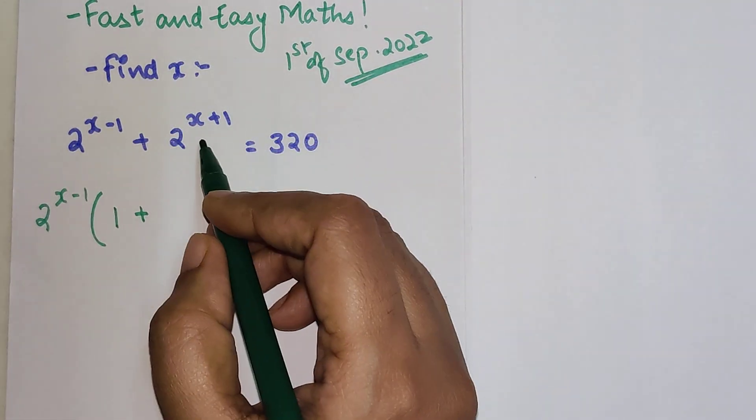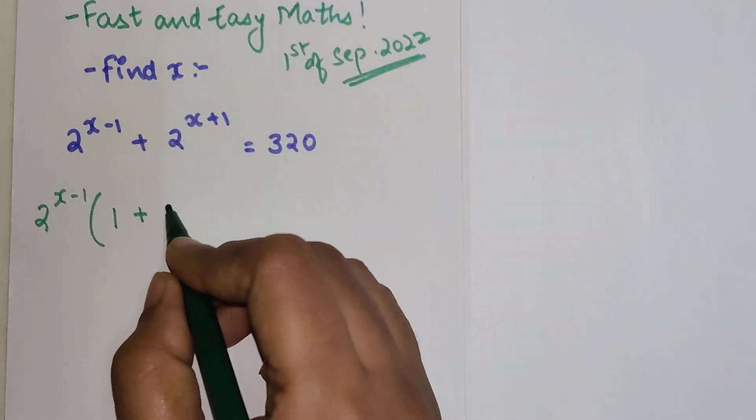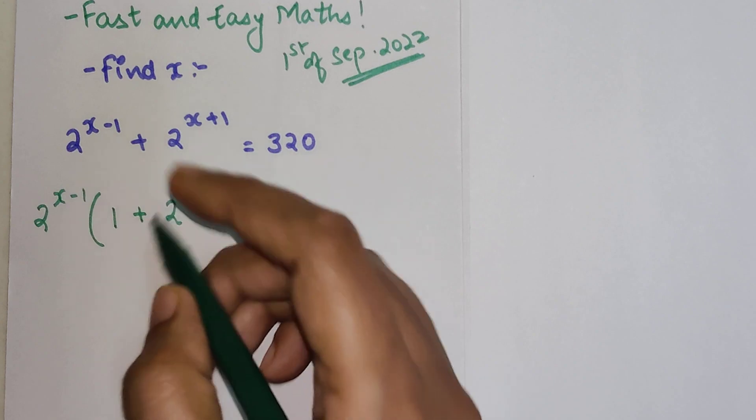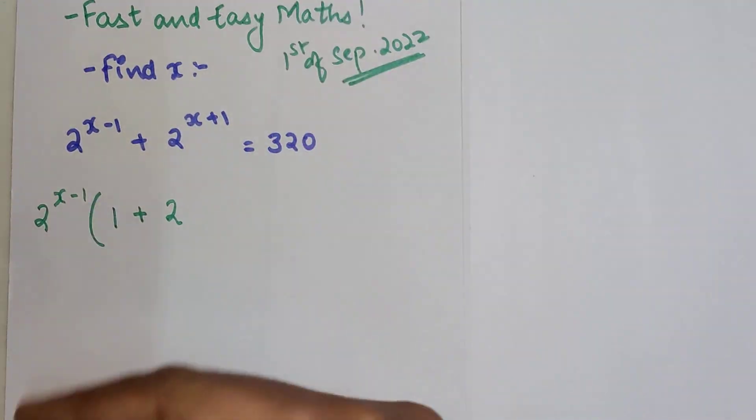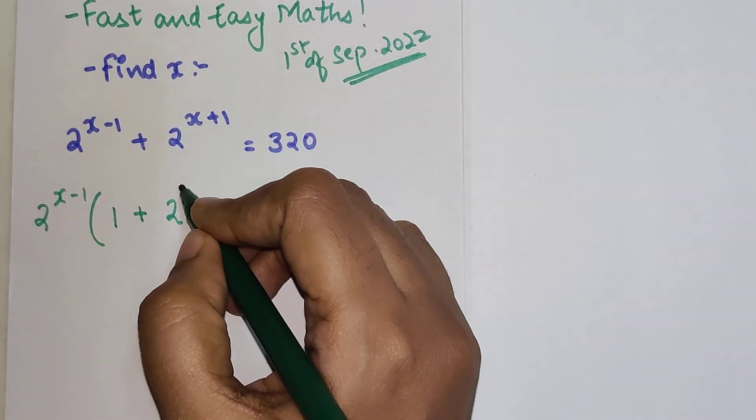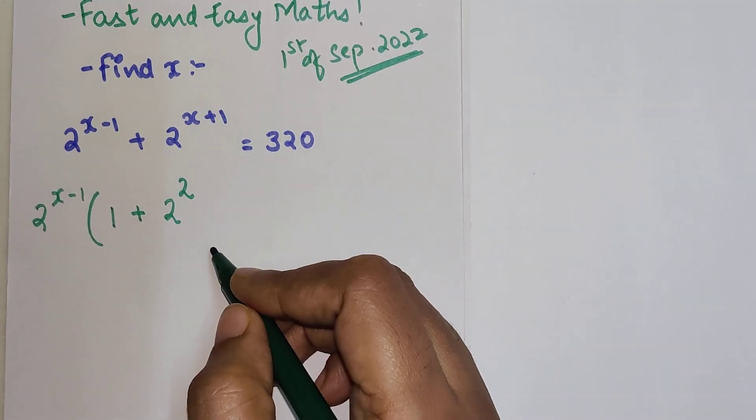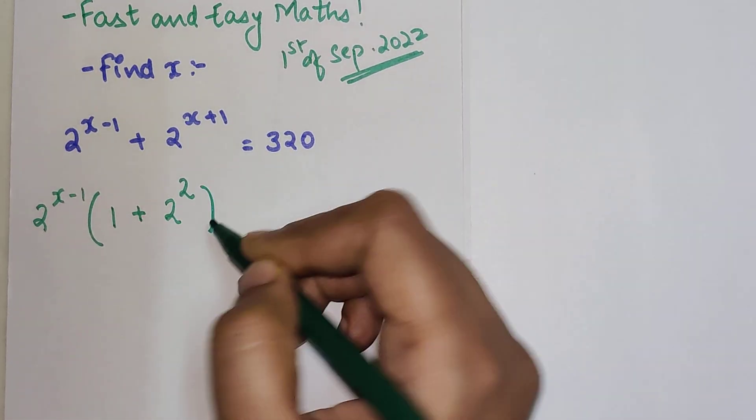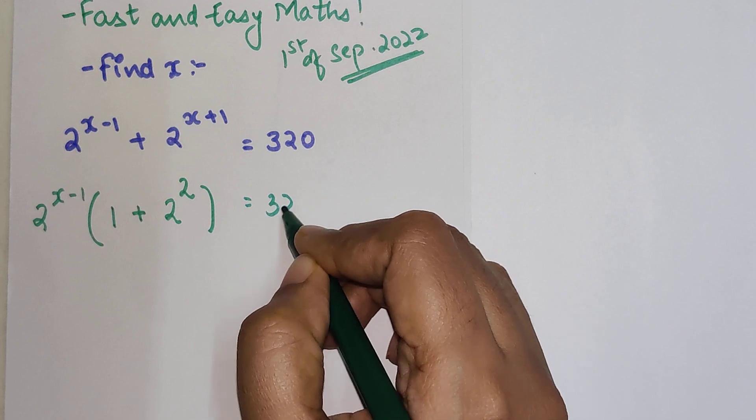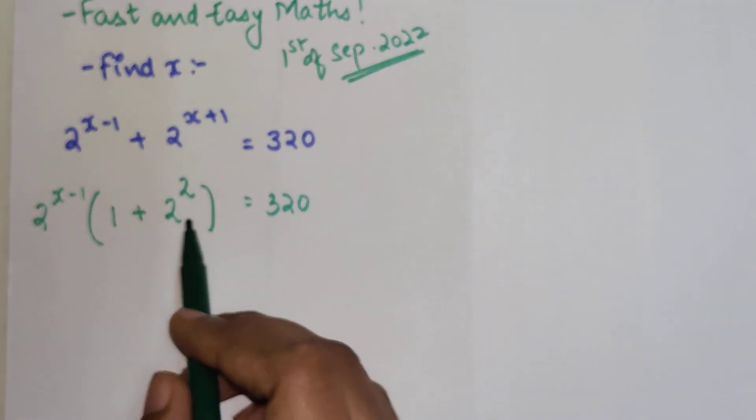If I remove 2 raised to x minus 1 from here, then I will be left with 2 raised to x and 2 raised to x plus 1. So basically 2 more 2's. So I will have to have 2 raised to 2, which will be equal to 320.